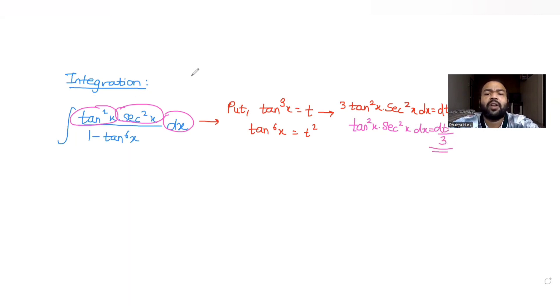Now I can reframe my question as dt by 3 over 1 minus t². Since tan³x becomes t², this gives 1/3 times the integral of 1 over 1 minus t² dt.